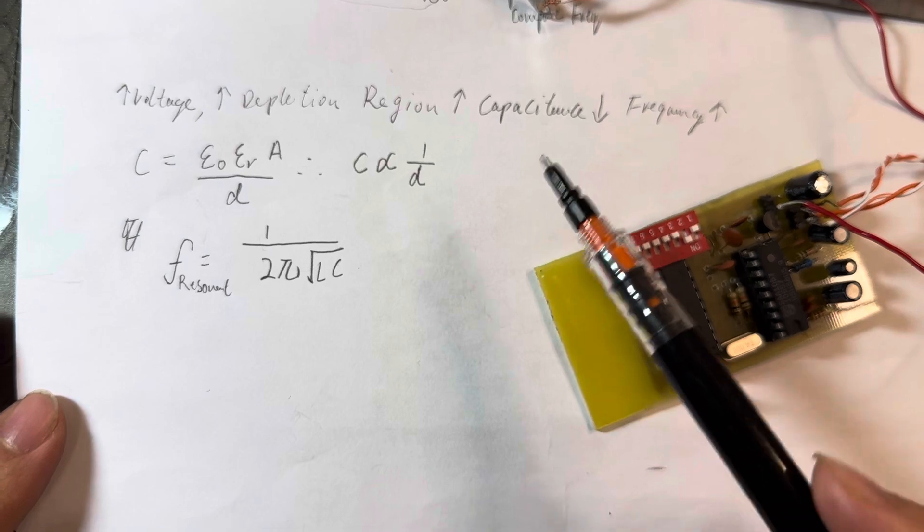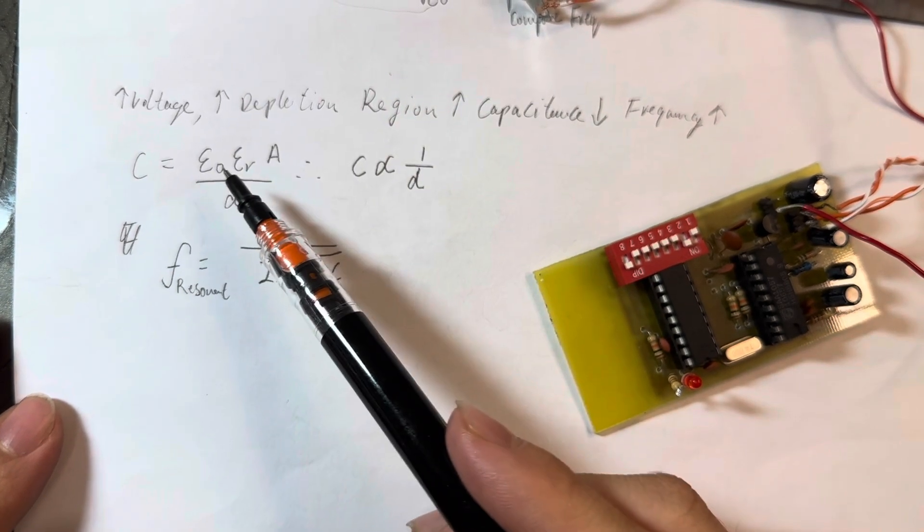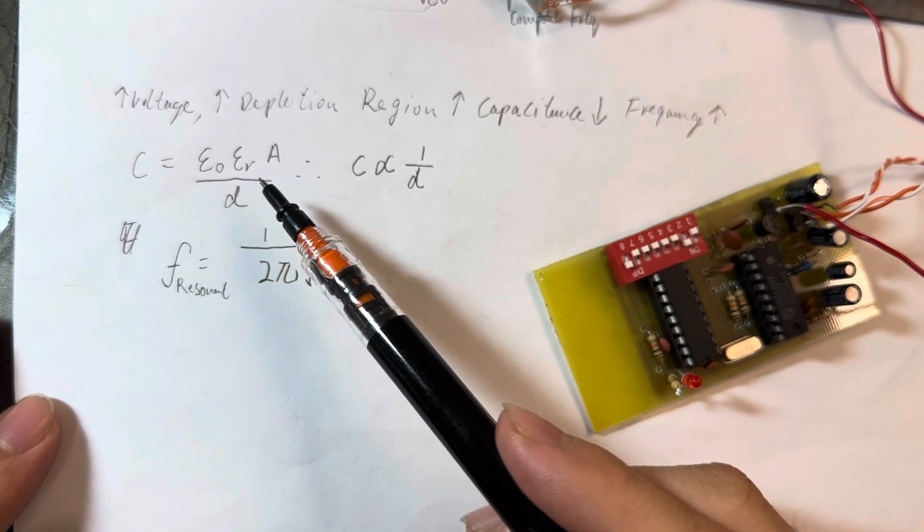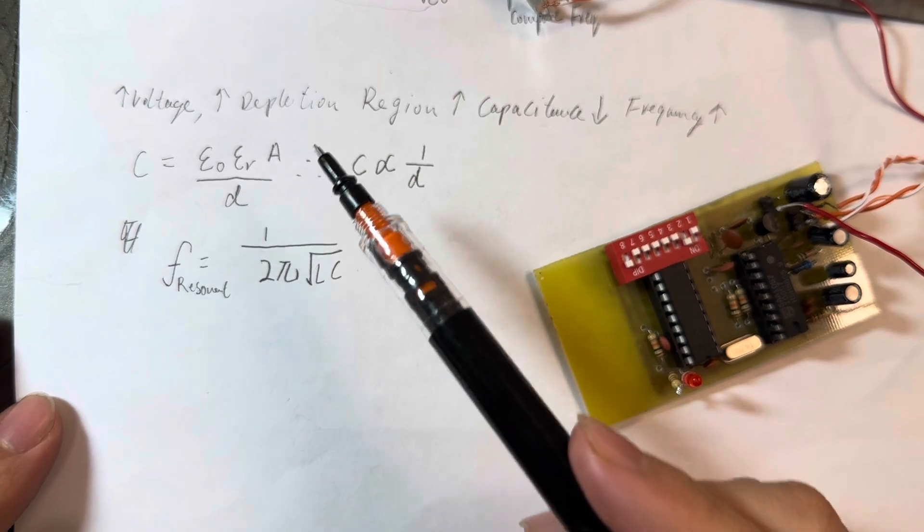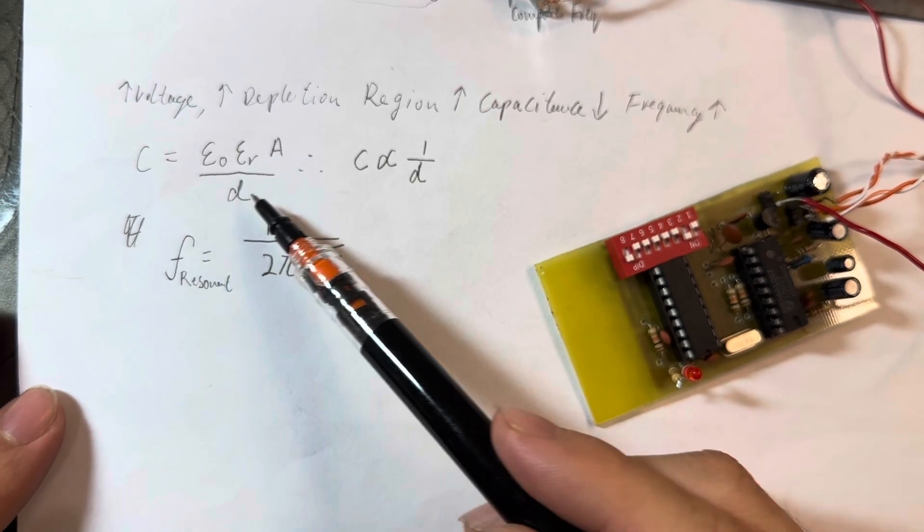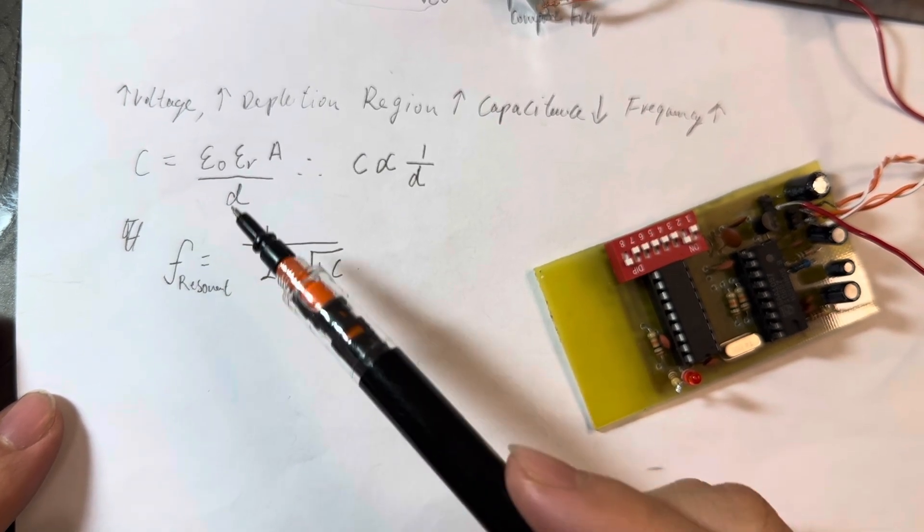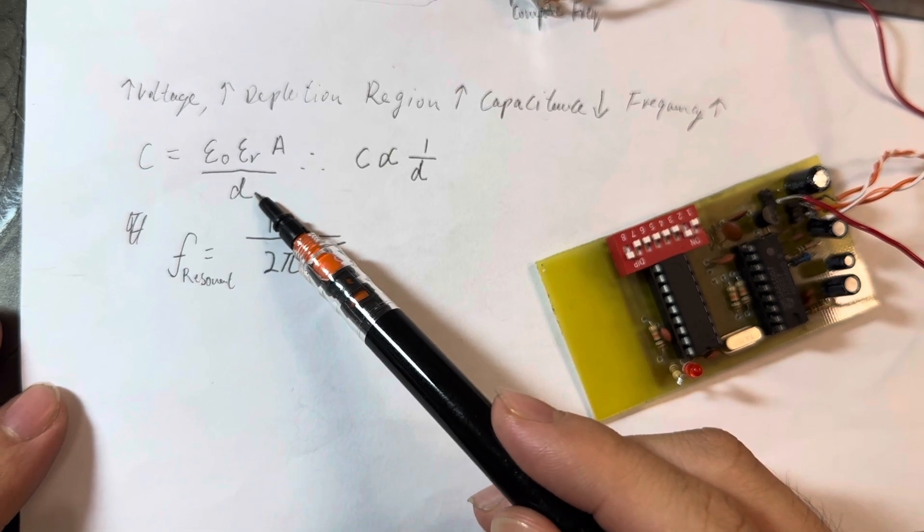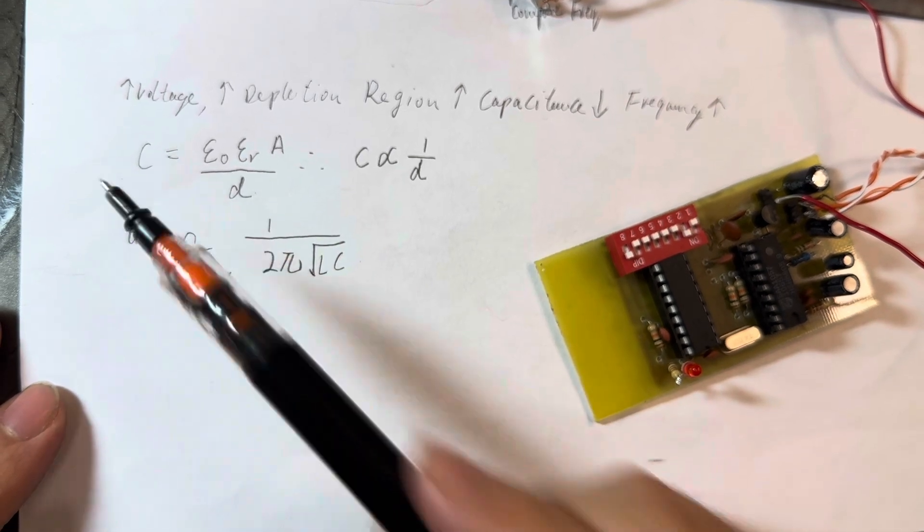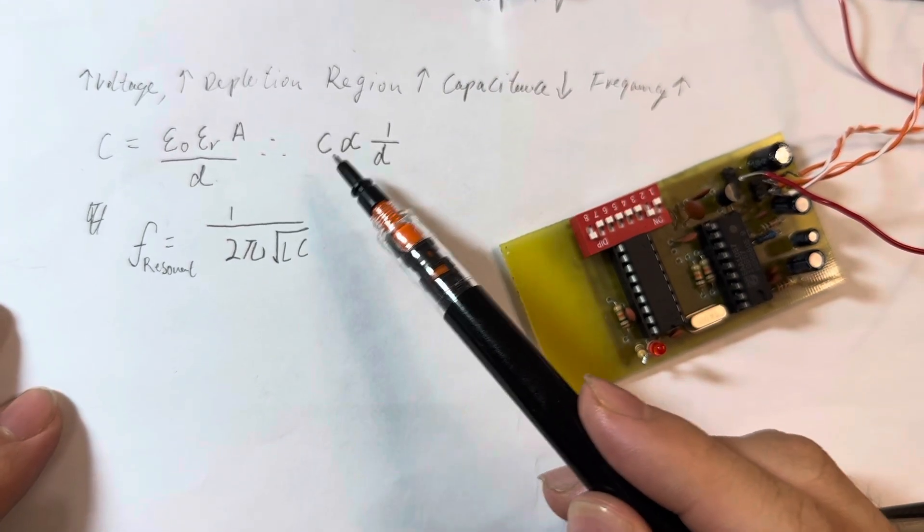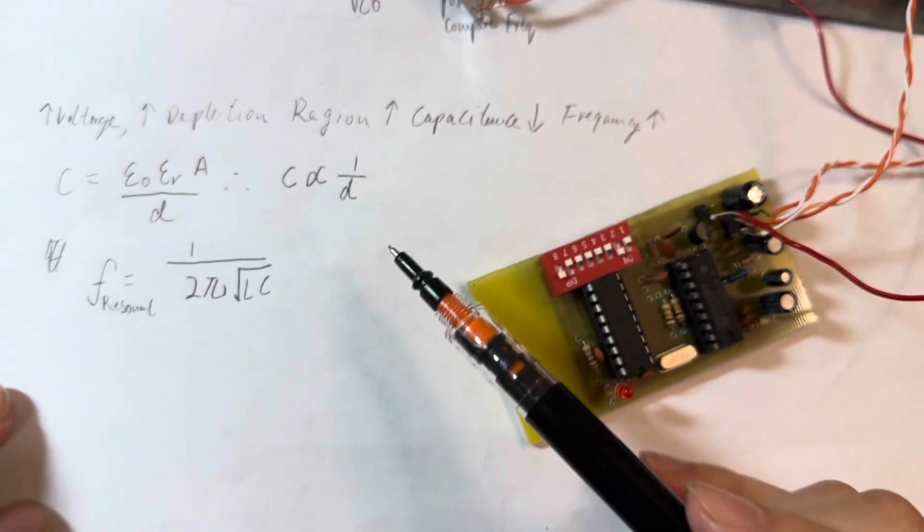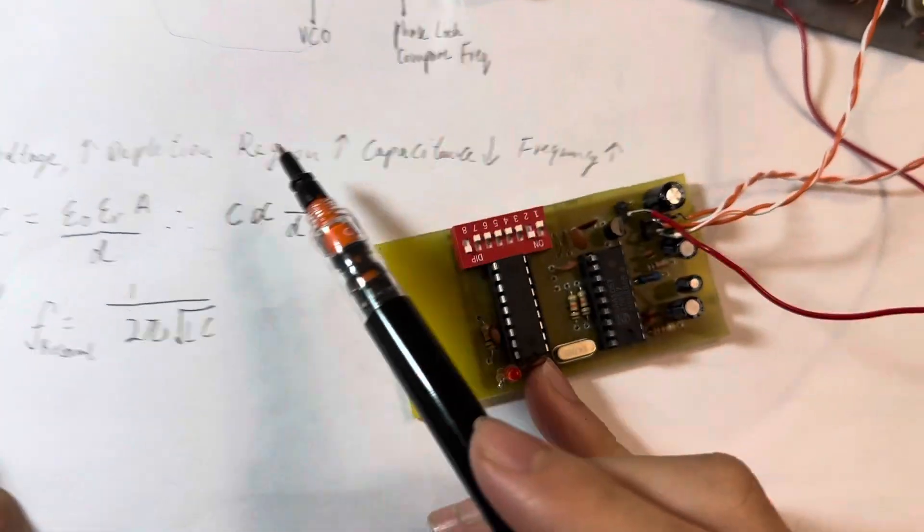As we can see here following our capacitor equation, C equals epsilon naught times epsilon R times A divided by D. Epsilon naught is the material dielectric constant, which follows up towards the silicon junction. A stands for the area of the diode, which is really small, and divided by the D. D stands for the distance. The smaller the distance, the larger the capacitance. The larger the distance of separation, the smaller the capacitance will be, which tells us capacitance is in proportional to 1 over D. And that's what happens here, and also frequency increases.